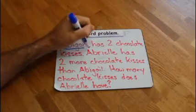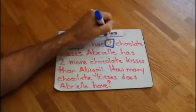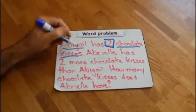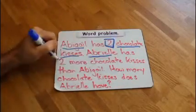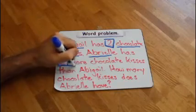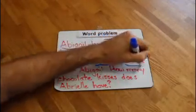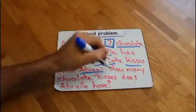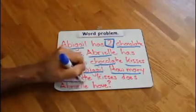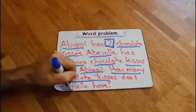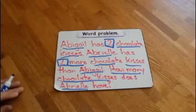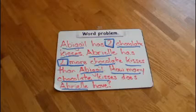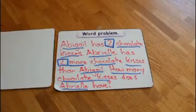Abigail has 2 chocolate kisses. Aubrielle has 2 more chocolate kisses than Abigail. How many chocolate kisses does Aubrielle have? Okay. Let's think about it. We've been working on this one this week. More than.